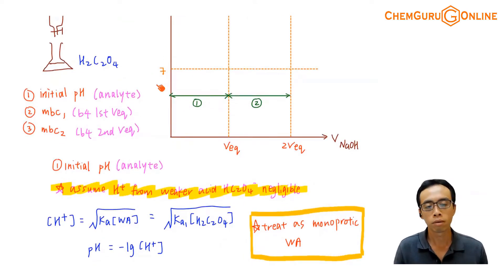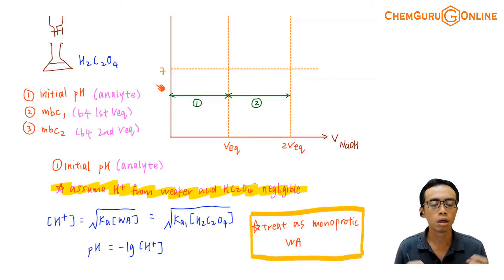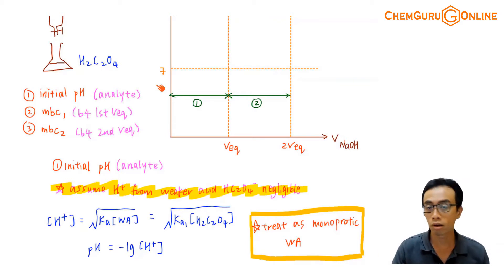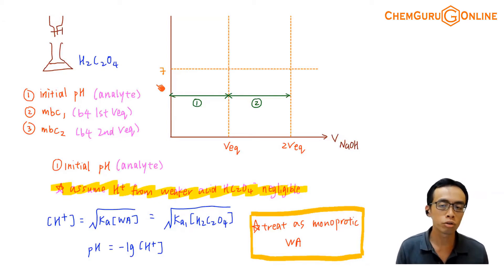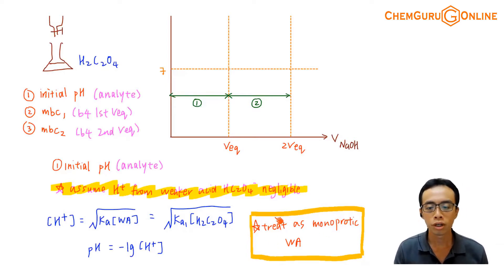Now if it is a diprotic acid, by right it should give me 2H⁺ — the first acid will dissociate to give 1H⁺, then the second acid will dissociate to give the second H⁺. If I try to work out the total H⁺ concentration from both species, it's actually a bit troublesome because I have two terms to worry about. What we do is we just do an approximation — I assume that the contribution of H⁺ just comes from the first dissociation, and the second acid's contribution is negligible.